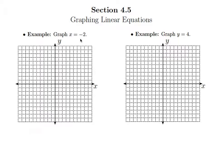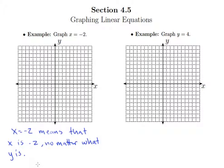The way to interpret this is to say the following: x = -2 means that x is -2 no matter what y is. In other words, the fact that y doesn't show up in the equation just means it doesn't matter. It doesn't matter what y is, x is always going to be -2.